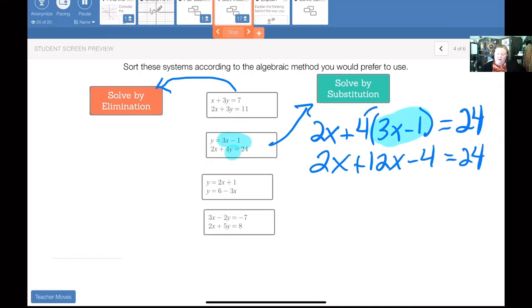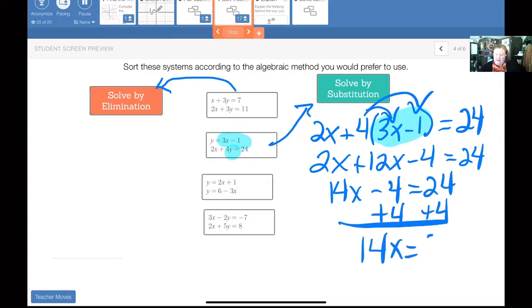So I took this 4 and I've distributed it. 2x plus 12x are like terms, so that becomes 14x minus 4 equals 24. I'm going to add the 4 to both sides. I get 14x equals 28. Divide each side by 14, x equals 2.